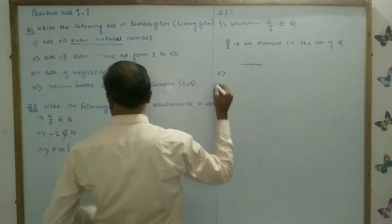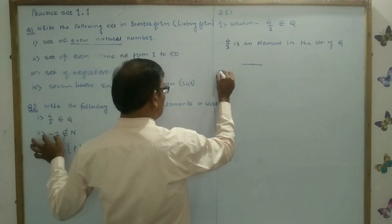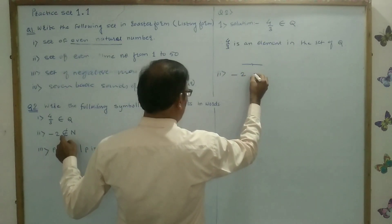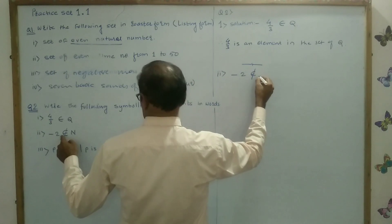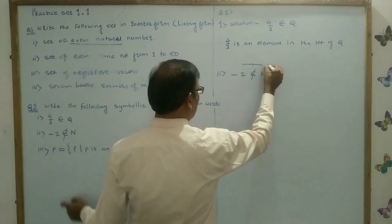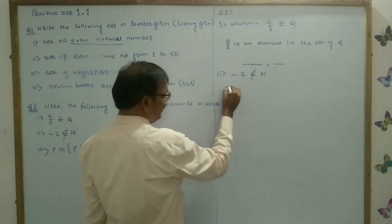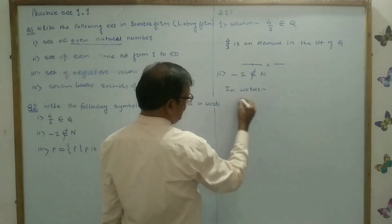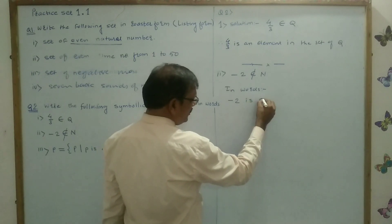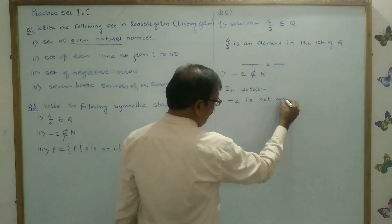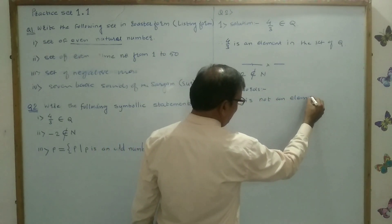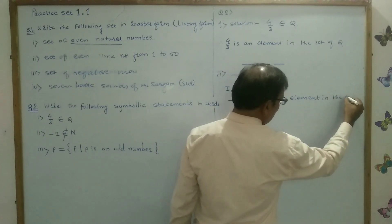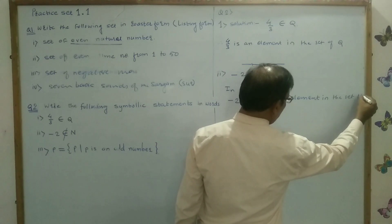Second, that is number 2: minus 2, not belongs to N. Means in words: minus 2 is not an element in the set of N.